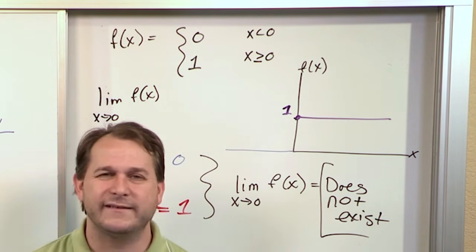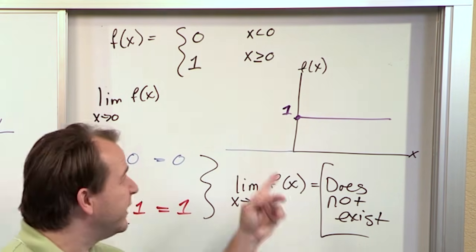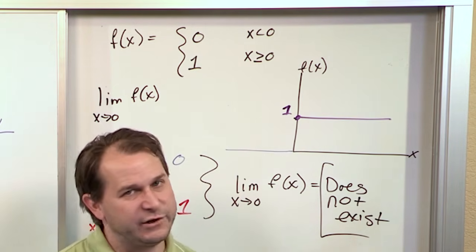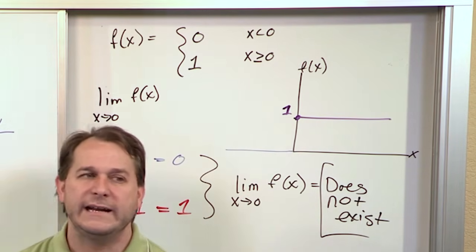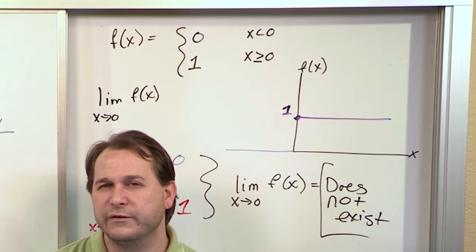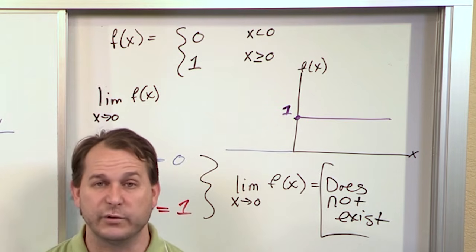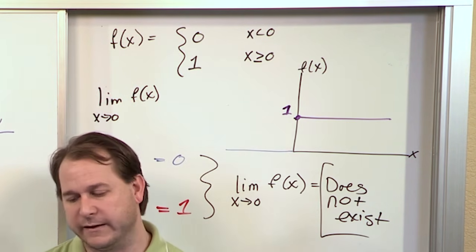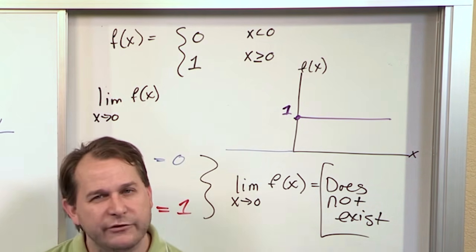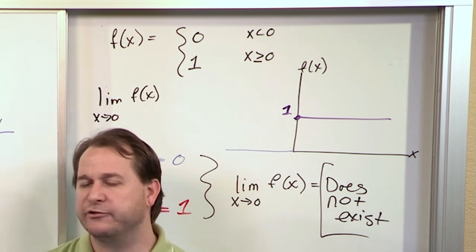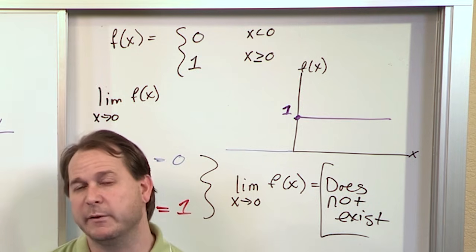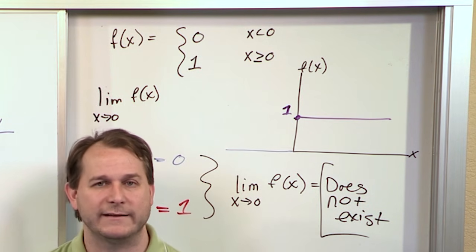The theorem says: if you approach from the left and right and get the same answer, the two-sided limit exists and equals L. If you get different answers, the two-sided limit does not exist. We can still say the left-hand and right-hand limits each exist individually, but the two-sided limit doesn't. This left-hand, right-hand stuff really only comes into play with weird, discontinuous functions. We'll work additional problems on limits using these concepts in the next section.